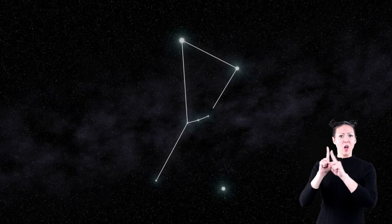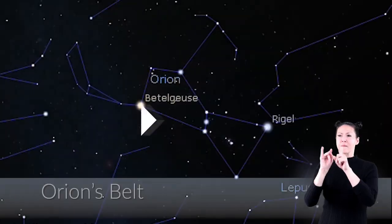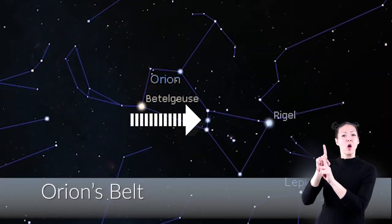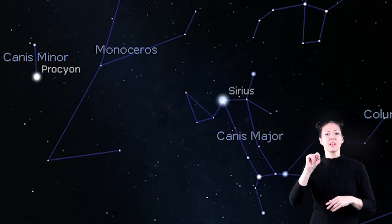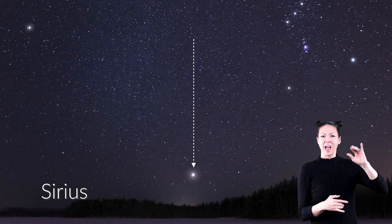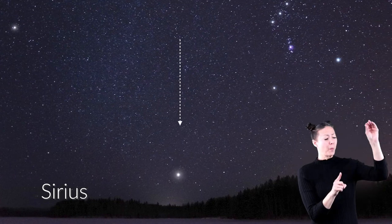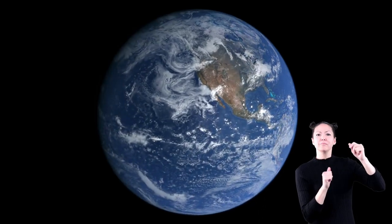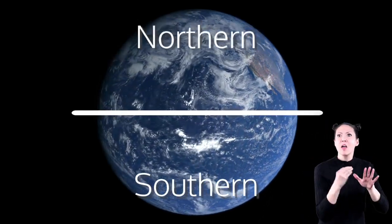Orion mainly consists of supergiant stars, which are the largest and brightest stars. Three of these stars form a line called Orion's Belt. They lead to Sirius, which is the brightest star in the sky. Orion can be seen from both the southern and the northern hemisphere.